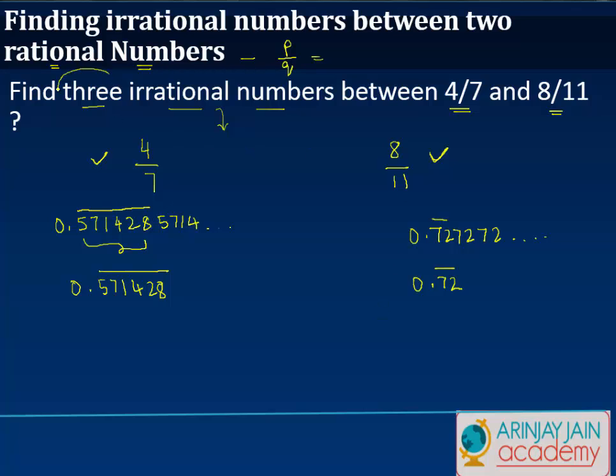Now whenever you have to find any given number of irrational numbers between two numbers, the easiest thing is to first look at these two digits. So here if you look at these two digits, you have 57, and if you look at the two digits in this case, it is 72. Now obviously any number which lies between these two, so between 57 and 72, is going to be lying between these two numbers.